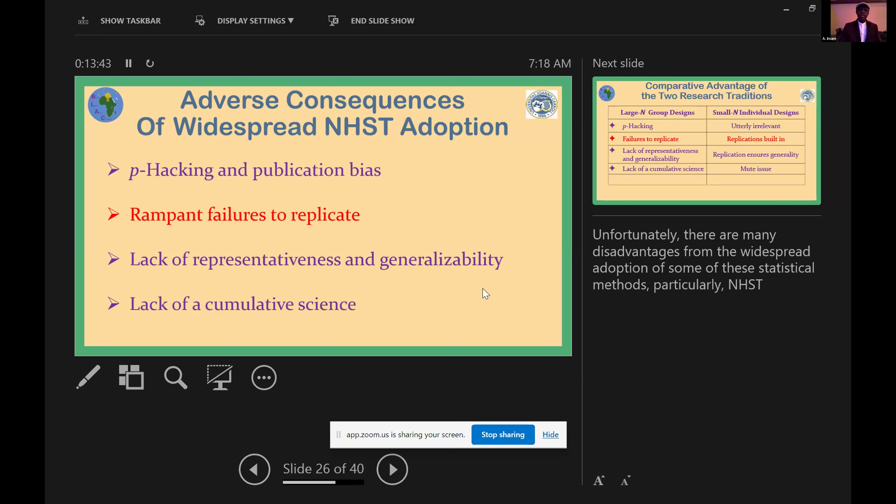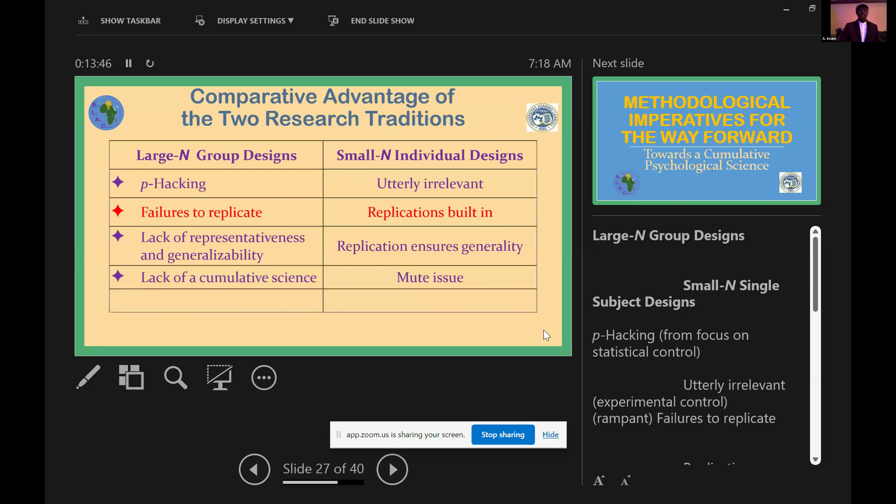Now if you compare small-N and large-N designs as both are used currently in contemporary research, we see that p-hacking is prevalent in large-N designs and it's utterly irrelevant in small-N designs. There are rampant failures to replicate in group designs; replication of course is built into small-N designs. Lack of representativeness and generalizability of course in group designs; replications in small-N designs ensures generality of the results. Lack of cumulative science is a phenomenon we witness in psychology relying on group designs, which is a moot issue with small-N designs.